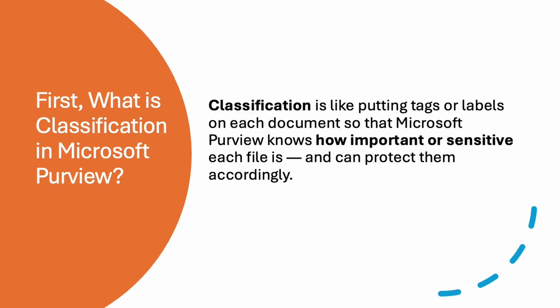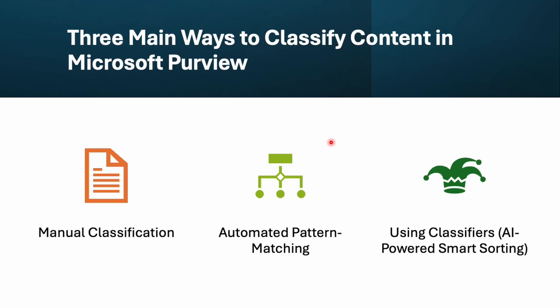Let's understand first what classification is in Microsoft Purview. Imagine your computer has thousands of documents — some are regular notes but others have sensitive data like credit card numbers, legal agreements, or salary details. Classification is like putting a tag or label on each document so that Microsoft Purview knows how important or sensitive each file is, and then it can start protecting them accordingly.